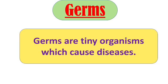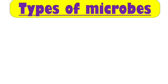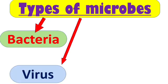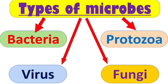Some microbes are harmful and some of them are useful or helpful. Those microbes that are harmful for our body and cause many diseases are known as germs. There are mainly four types of microbes: bacteria, virus, fungi, and protozoa.